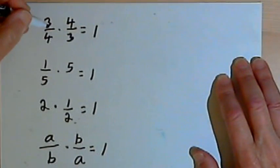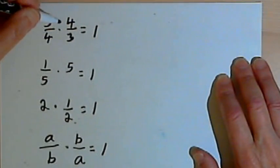If I start out with a number, like 3 over 4, and I want to multiply it by something so the product is 1, I multiply it by what's called its multiplicative inverse or its reciprocal. That might be the term you're more used to.